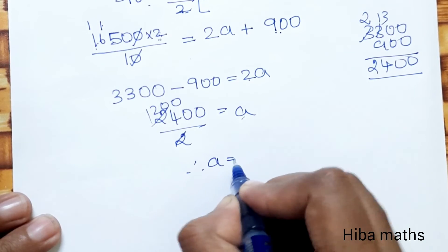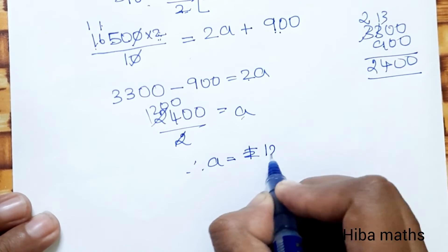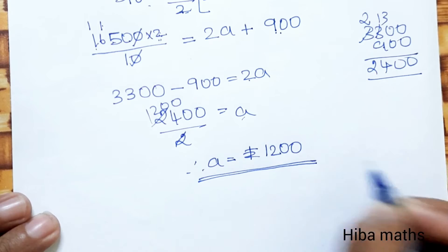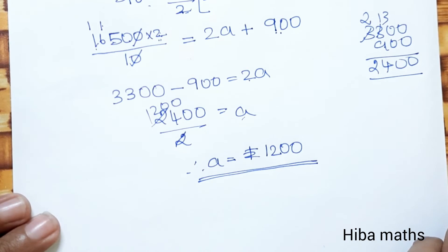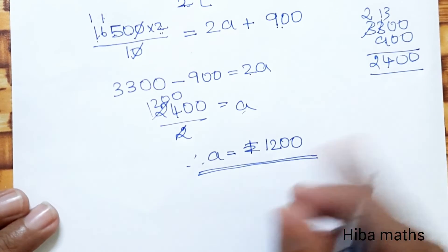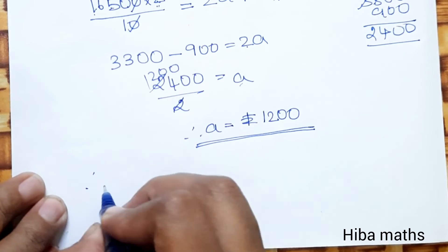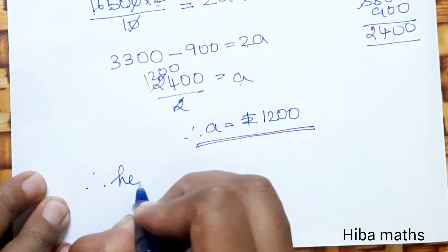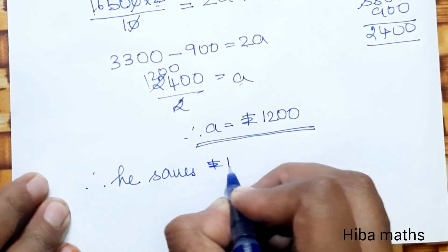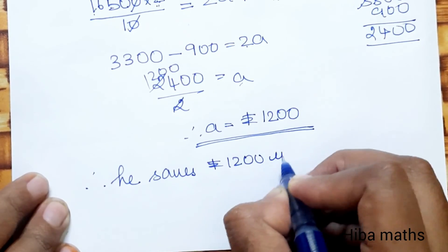Therefore A is equal to Rs.1,200. This is your first year savings. How much did he save in the first year? Therefore he saves Rs.1,200 in the first year.